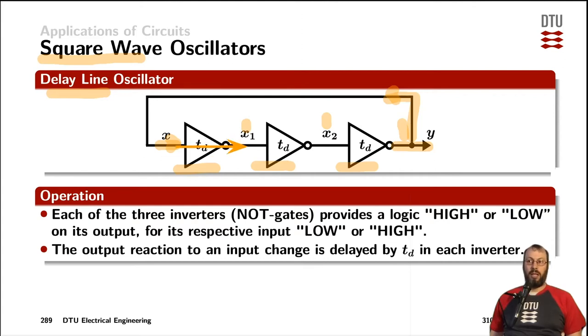Each of those transitions from the input to the output takes a little bit of time, the so-called delay time t_d, and the summation of all of those delays gives us our frequency. We can furthermore adjust that oscillation frequency by the number of delay lines that we are putting into the oscillation loop.